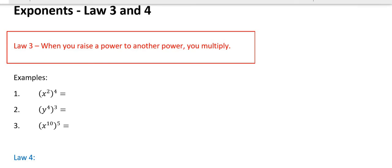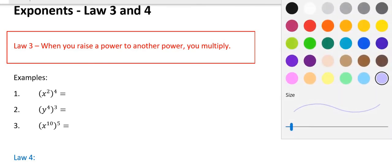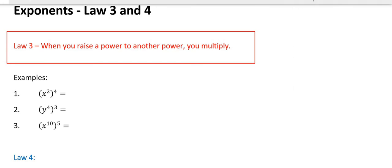Law 3 we've done before. Law 3 says when you raise a power to another power, you multiply the exponents. This should be in your book already, but if it's not, make sure that you have written down the fact that Law 3 says when you raise a power to another power, you multiply.